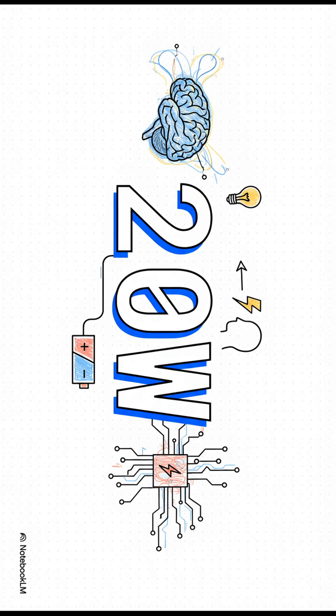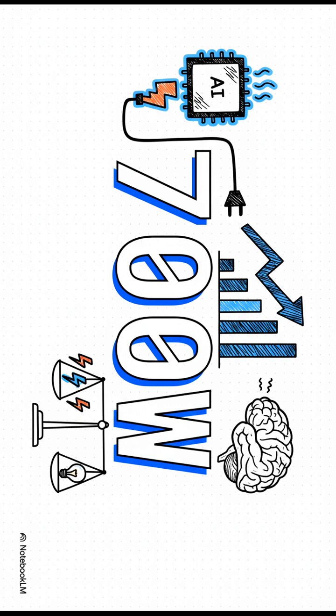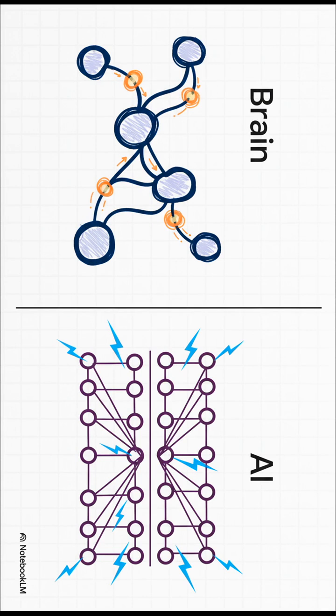Your brain, it sips energy, running on just about 20 watts. Compare that to a single AI chip, which can guzzle up to 700 watts. That difference is just wild. So why the huge gap? It's all down to how they're wired and how they send signals.